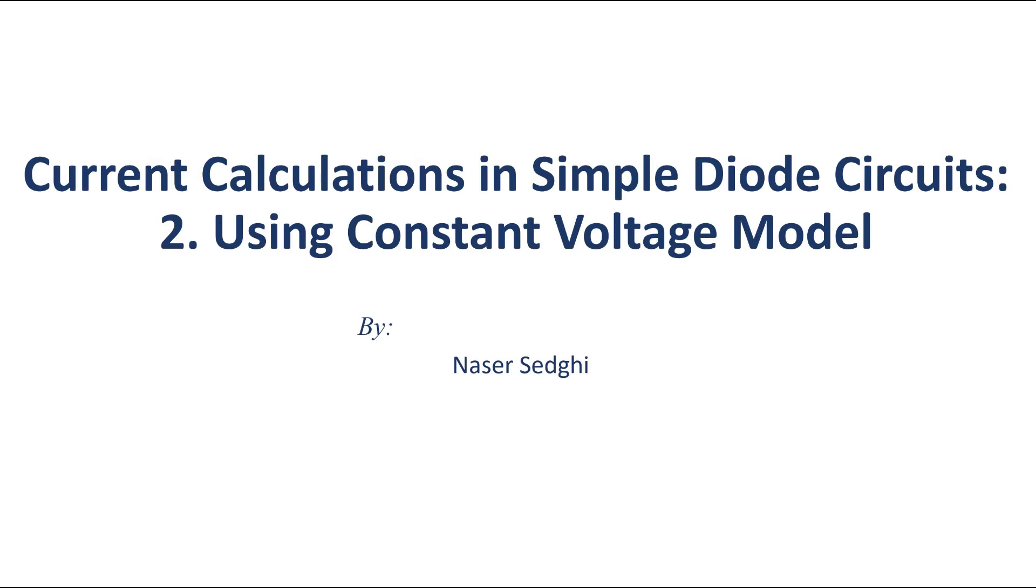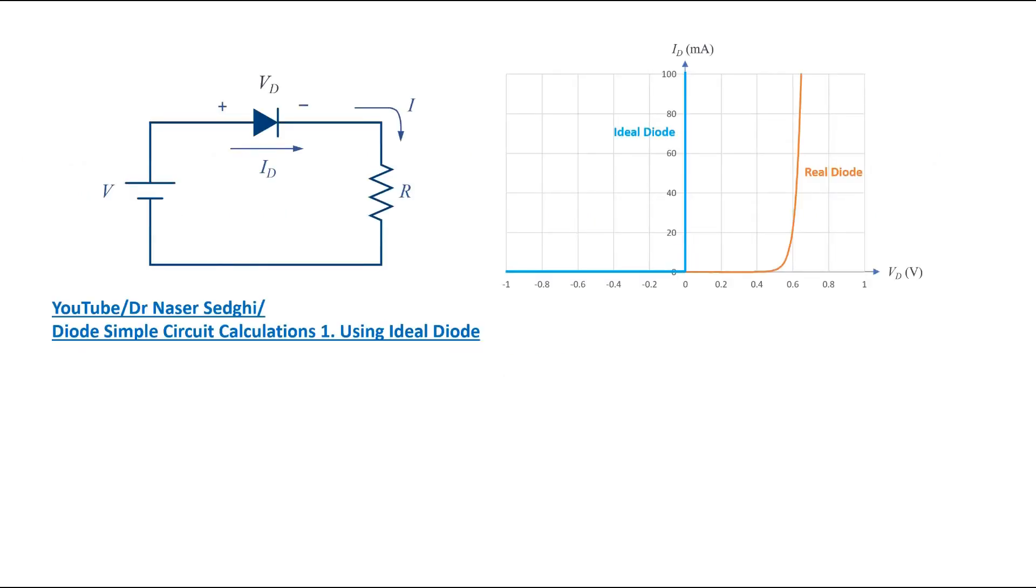This is the method used most of the time and is pretty accurate. In a previous video, I showed how to calculate the current using the ideal diode. However, this method is not very accurate, especially when the applied voltage is small.